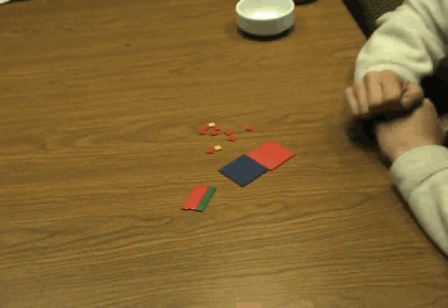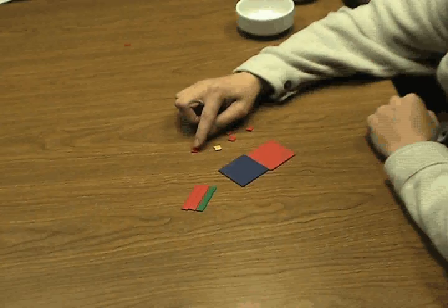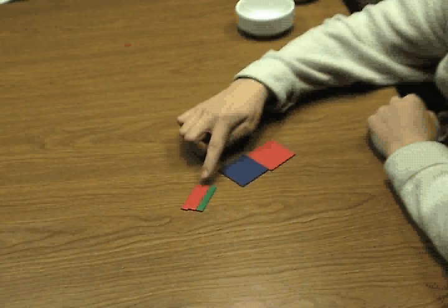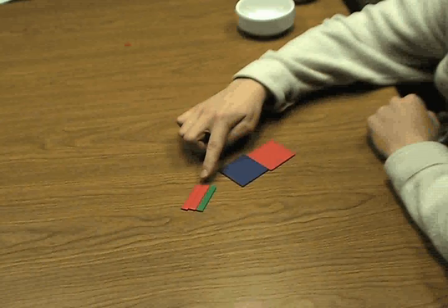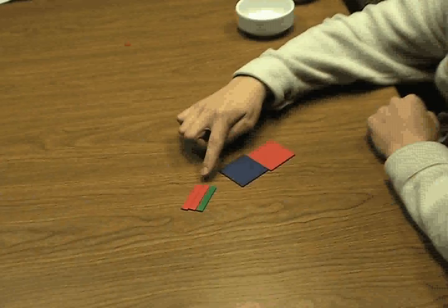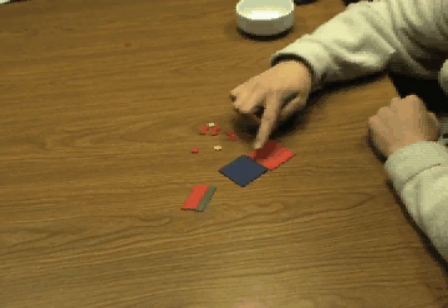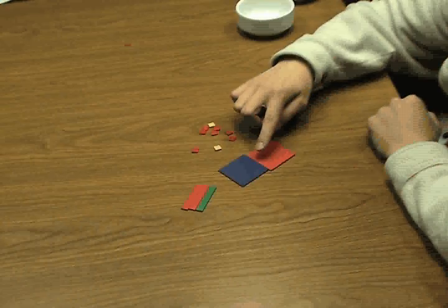The small squares represent units or ones. The rectangles represent tens or the variable x, depending on the concept you are teaching. The large squares represent 100, or x squared.